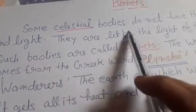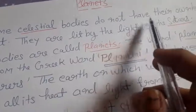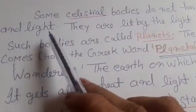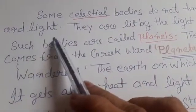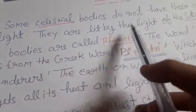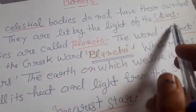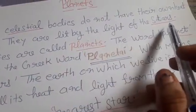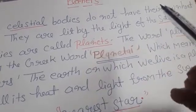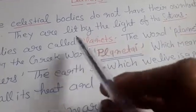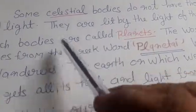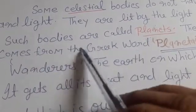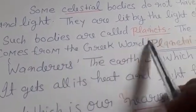Some celestial bodies do not have their own light and heat. They are lit by the light of the stars. Such bodies are called planets. We call them planets.